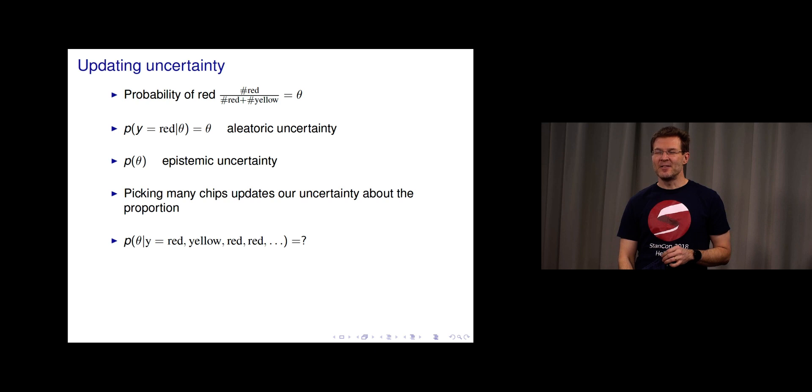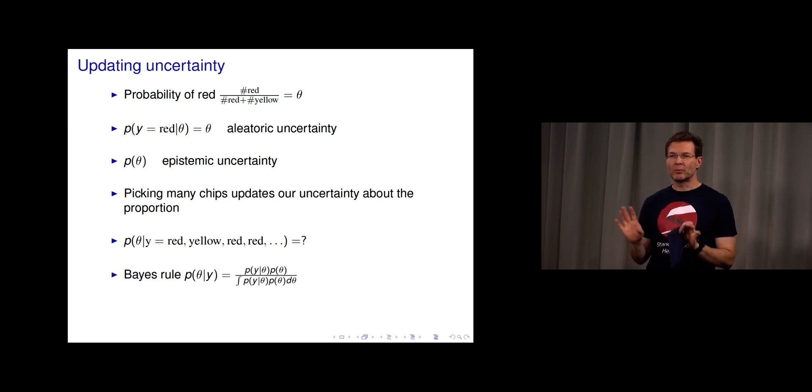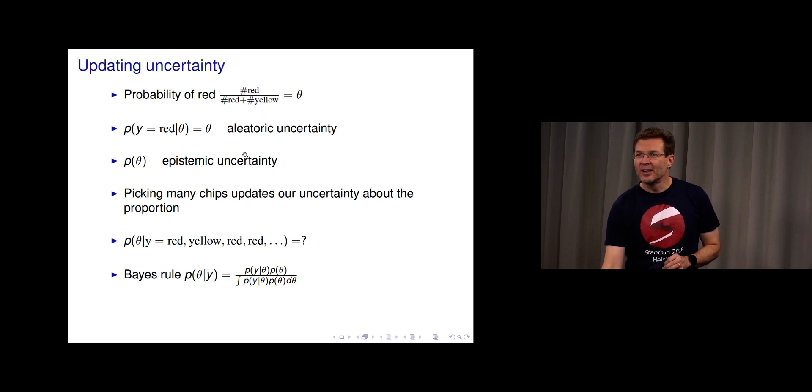How do we compute this? It happens to be the Bayes rule. I'll come back to Bayes rule more later. But you can see here in the Bayes rule, we have the aleatoric uncertainty part P(Y|theta), we have the epistemic uncertainty about theta, and we have something called the normalization term.